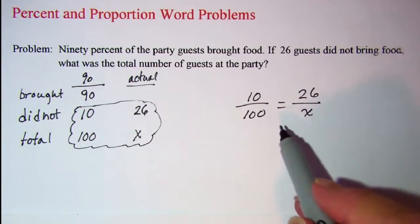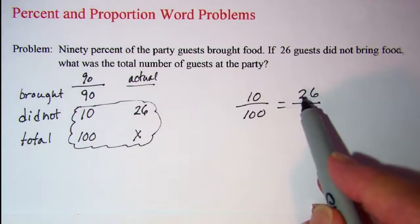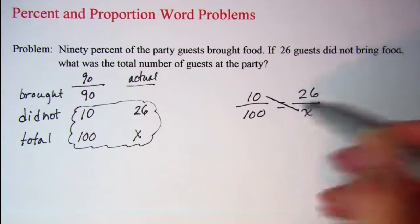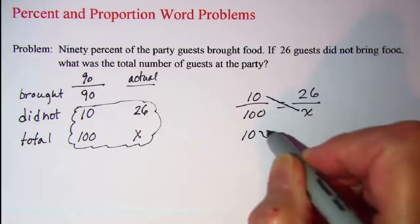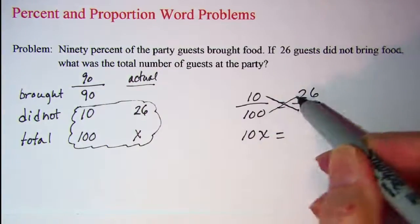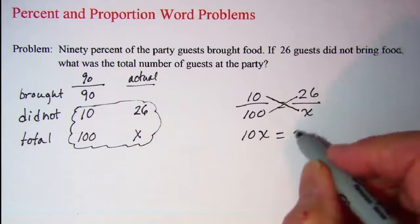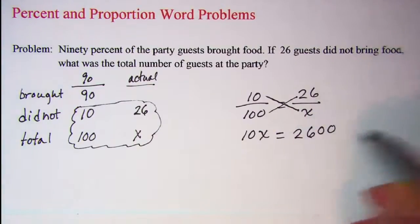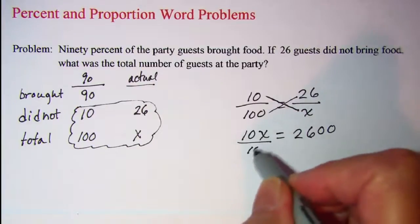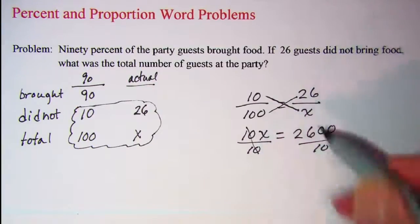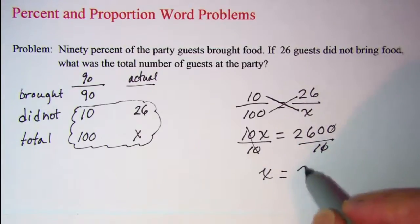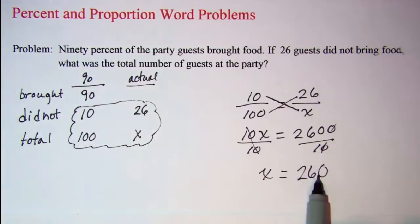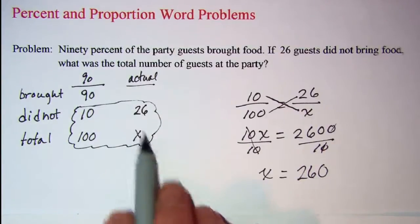When we have a proportion, the product of the extremes equals the product of the means. So I multiply my extremes and get 10x, and that has to equal the product of the means, which is 2600. Solving this equation, divide both sides by 10, and we get x equals 260. So that means we had 260 total guests.